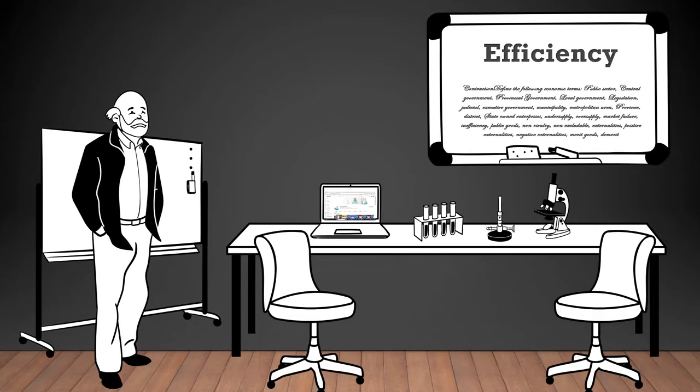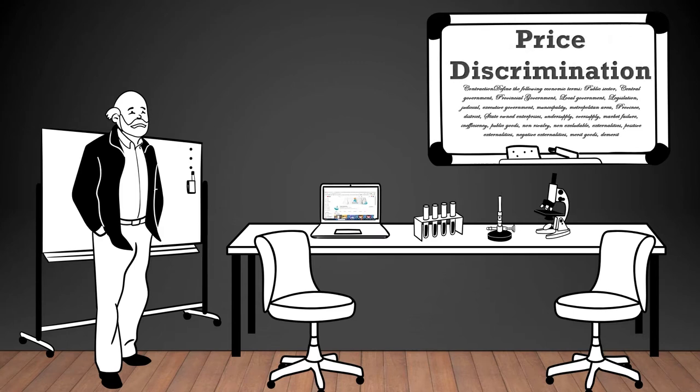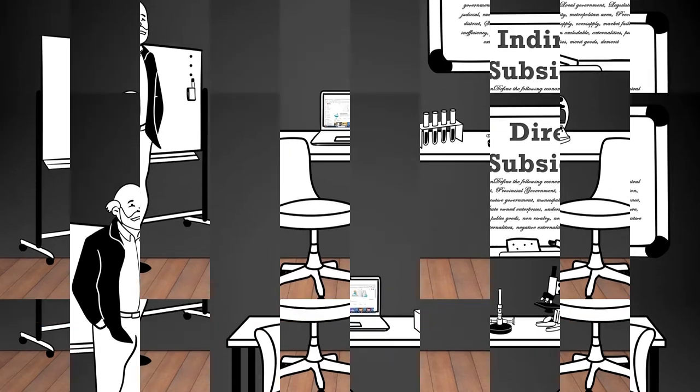Efficiency: the optimal use of resources to produce the maximum possible output. Community goods: goods and services that are jointly consumed and benefit an entire community or society. Price discrimination: the practice of charging different prices for the same good or service to different consumers. Direct subsidies: financial assistance or support provided by the government directly to individuals, businesses, or specific industries to promote certain activities, reduce costs, or address economic challenges.